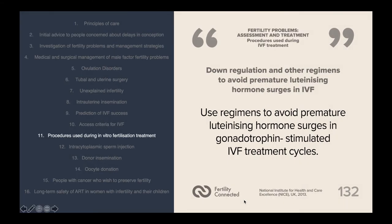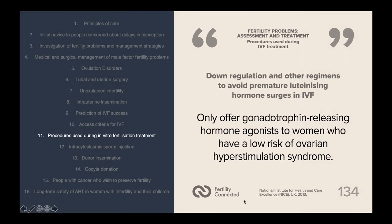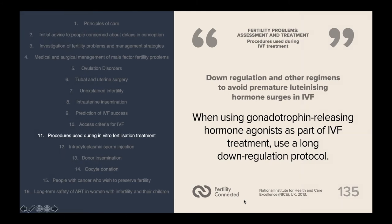When it comes to down-regulation and other regimens to avoid premature LH surges in IVF: use either gonadotrophin-releasing hormone agonist down-regulation or GnRH antagonist as part of gonadotrophin-stimulated IVF treatment cycles. Only offer GnRH agonist down-regulation to women who have a low risk of ovarian hyperstimulation syndrome. When using GnRH agonist as part of IVF treatment, use a long down-regulation protocol.